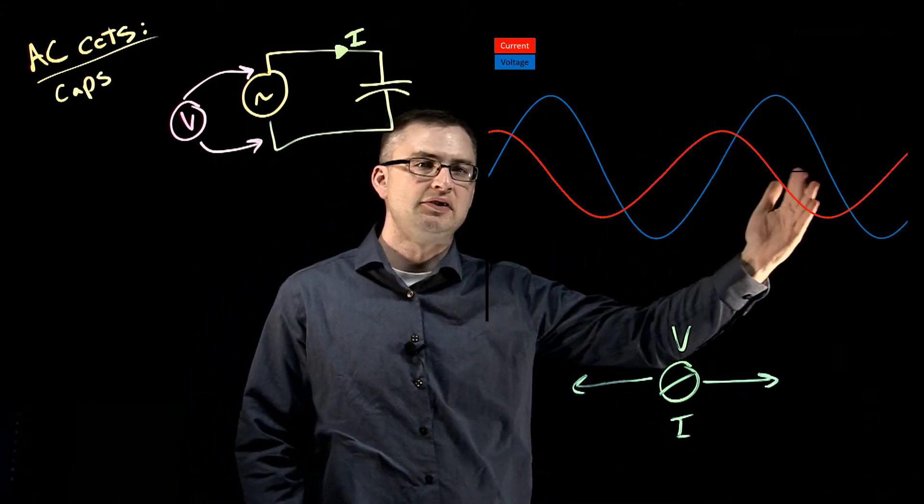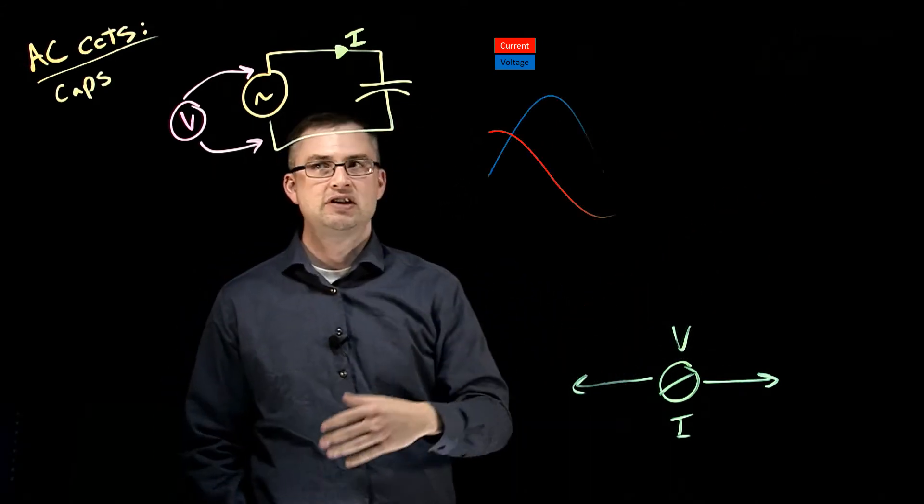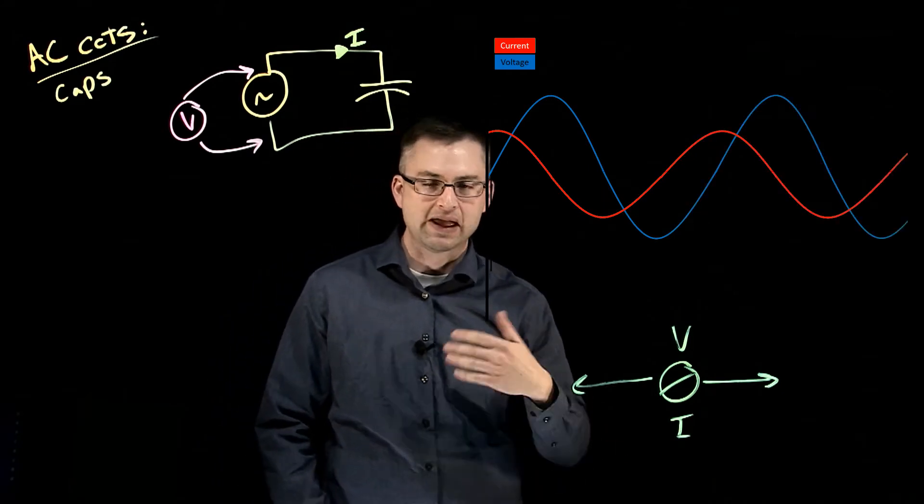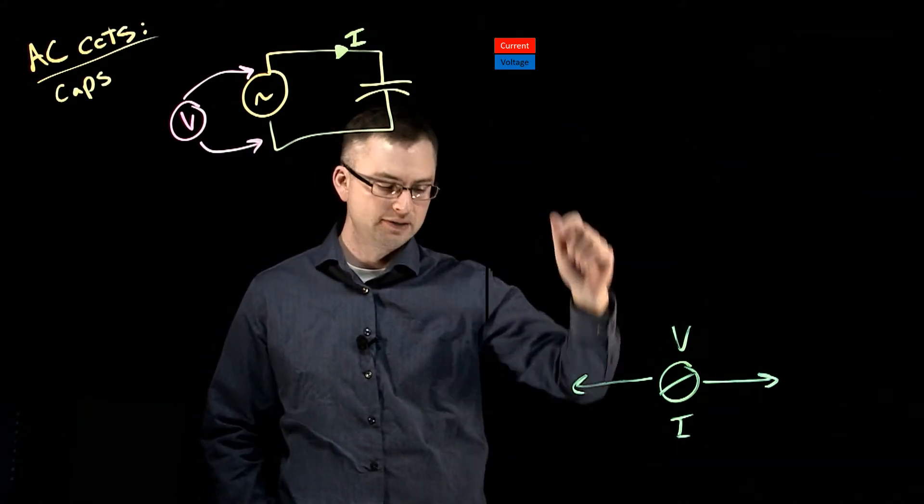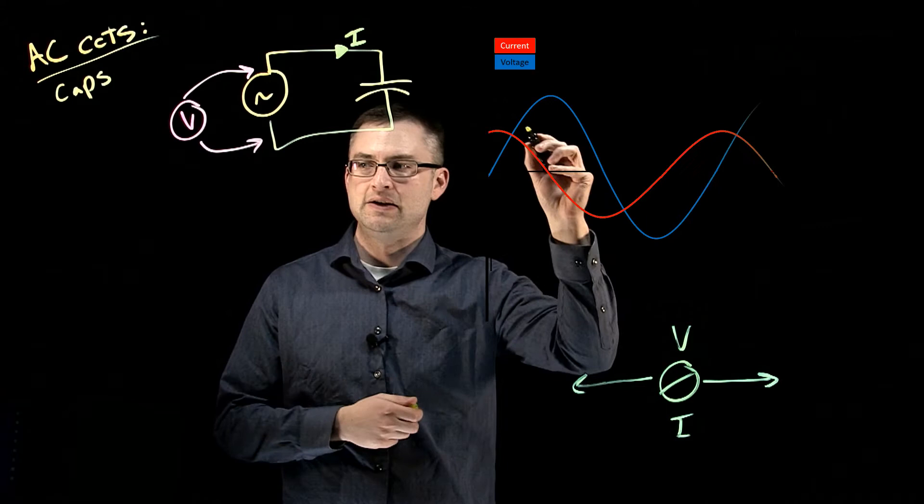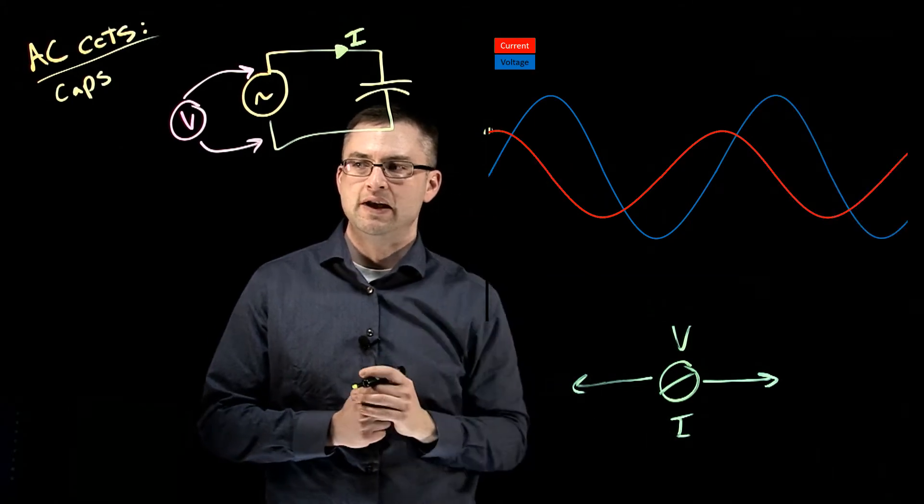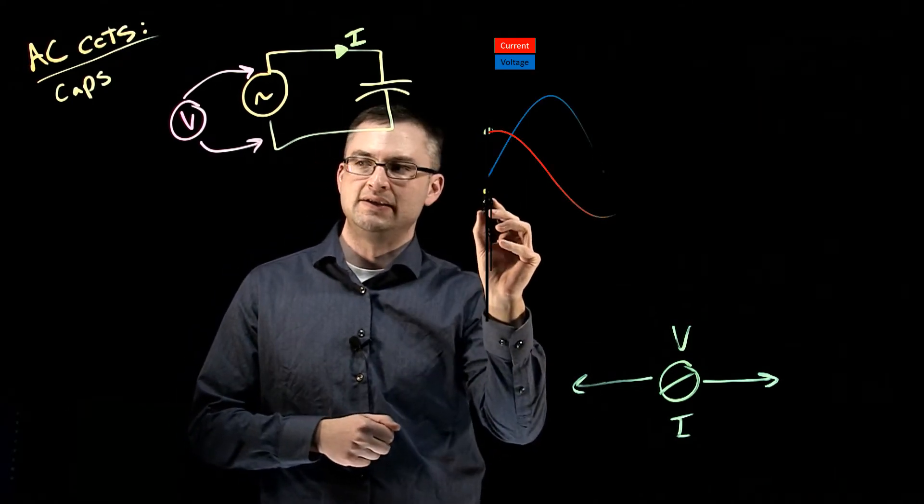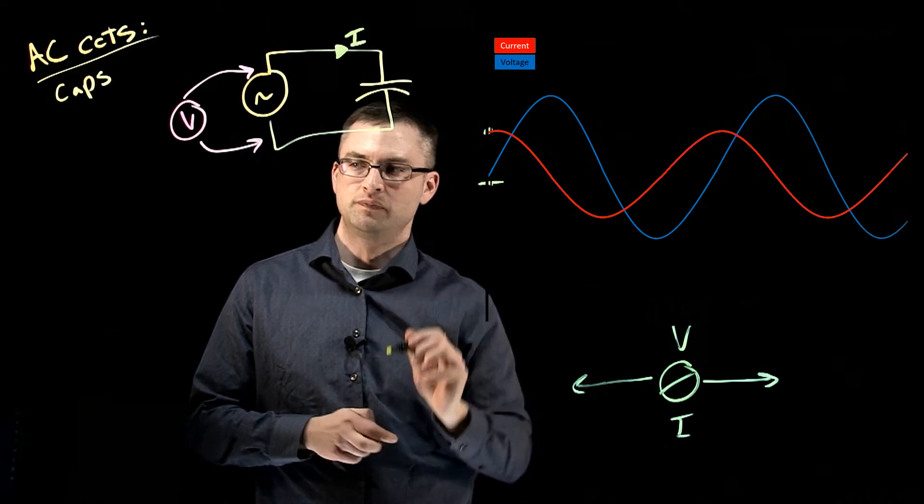And we can see that throughout that system, that voltage is actually lagging current. So we have full current, which is about here. We've got full current when our voltage is at zero.